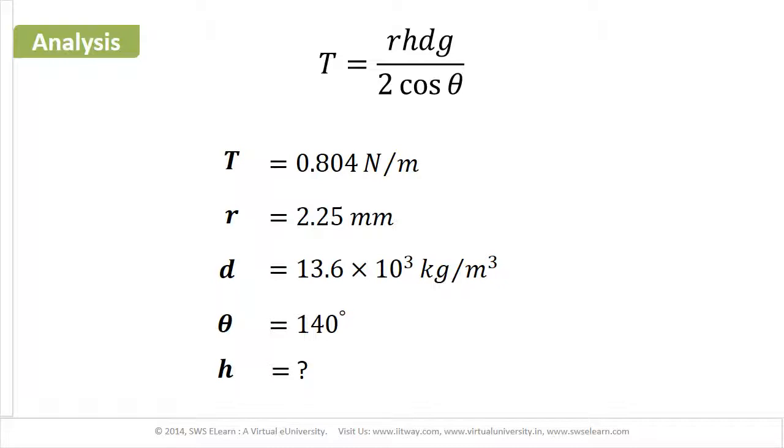In this problem, the values of T, R, θ, and D are given. Substituting these values in the equation, we get H as the value of depression of mercury.